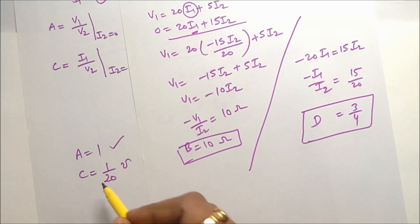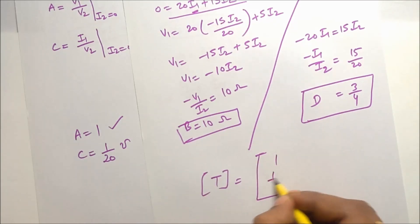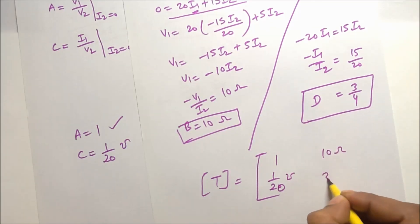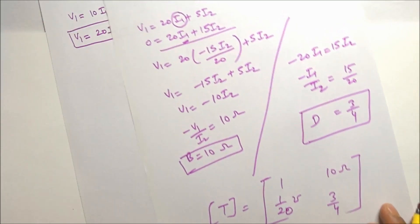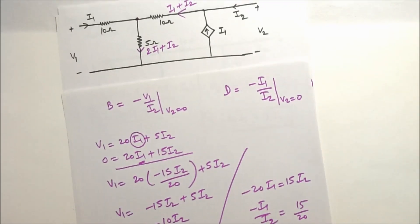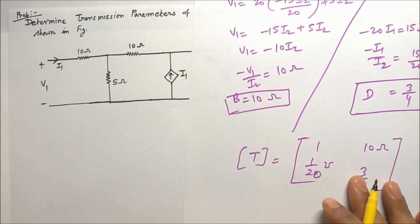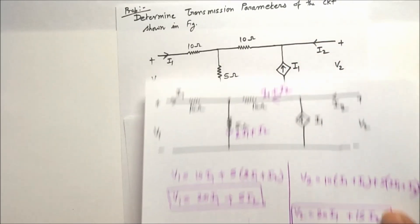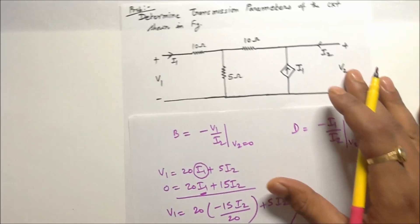We have already calculated the values of A and C, so precisely the transmission parameter matrix is: A equals 1, B equals 10, C equals 1/20, D equals 3/4. In this way we have solved this problem. We got two equations and with the help of those two equations we calculated the T parameters of this circuit.